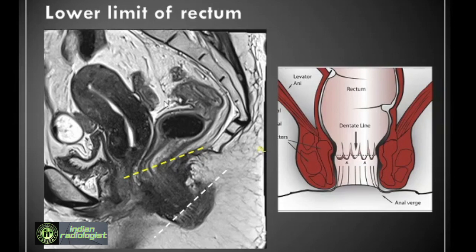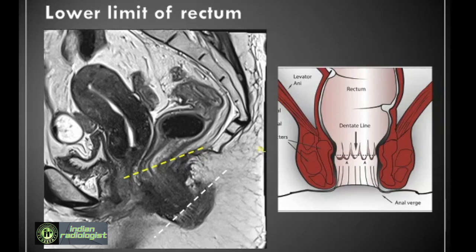Coming to the lower limit of rectum: the anal canal is the inferior continuation of the rectum which opens to the exterior at the anal verge. The anorectal junction is taken to be the point at which the long axis of rectum changes from anterior inferior to posterior inferior, and this has been marked by a yellow dashed line in this sagittal T2-weighted MR. This point also corresponds to the upper limit of the puborectalis muscle where it fuses with the levator muscle. The change in axis is well visualized in sagittal T2-weighted MRI, whereas the puborectalis is better seen in coronal T2-weighted MRI. The dentate line is another landmark taken by anatomists to be the point for the anorectal junction, but this is not relevant clinically or radiologically as it is not seen.